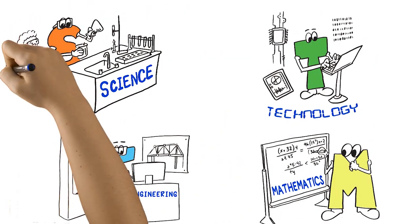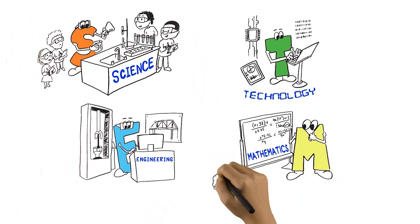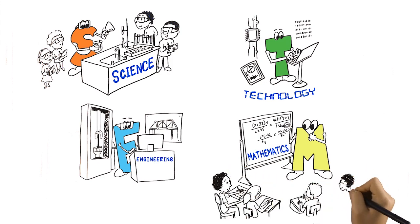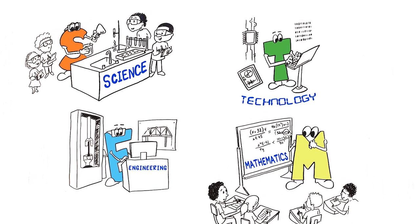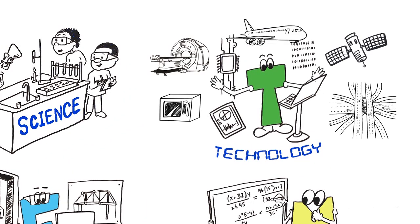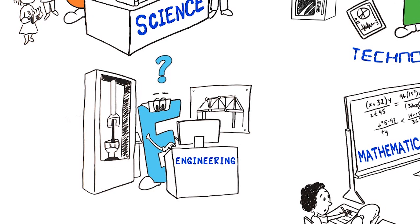In kindergarten through 12th grade in the United States, most STEM teaching and learning focuses on science or mathematics. Comparatively little attention has been paid to the T, the products and systems that meet human needs, and E, the creative process used to design these things.